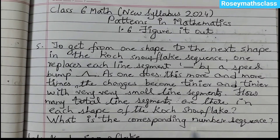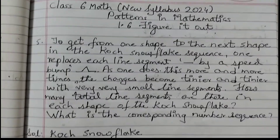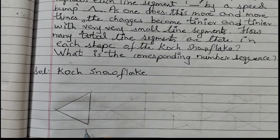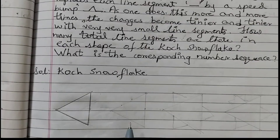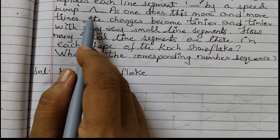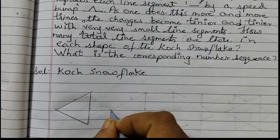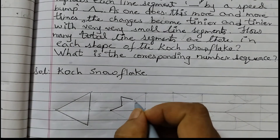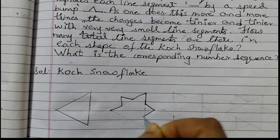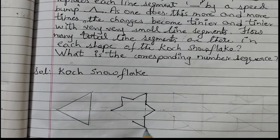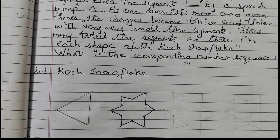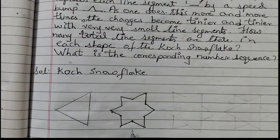This is the first question: what is the corresponding number sequence? First we will draw the Koch snowflake figure. I have drawn the first one — it's like an equilateral triangle with three equal sides. The next shape in this sequence: you need to divide each side into three equal parts and draw a triangle like a speed bump. So you draw a triangle here, then a speed bump again here. This looks like a star.